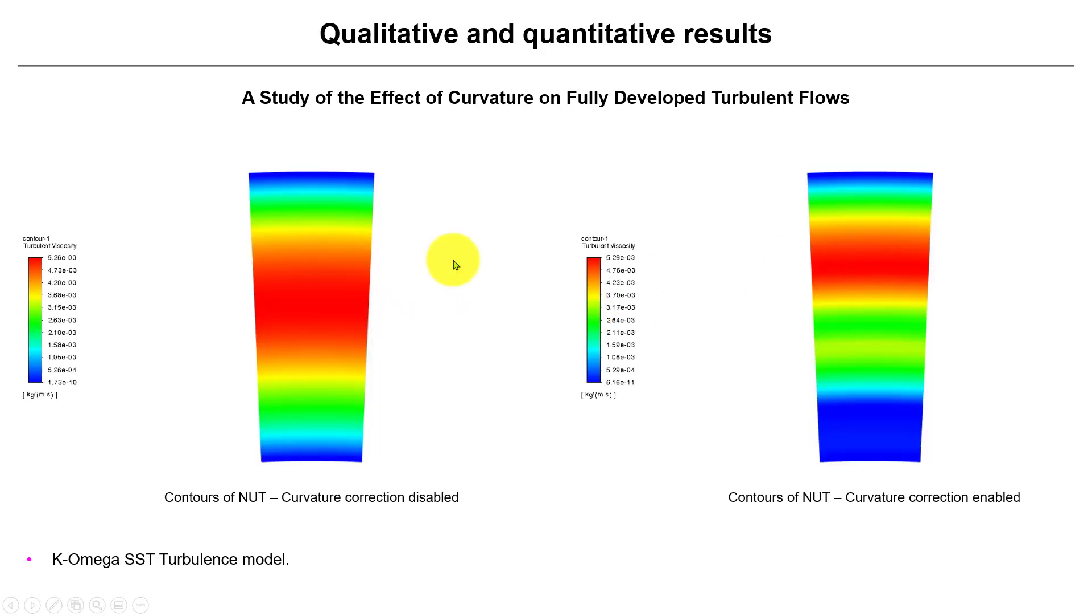And the same, well, we plot the node and see that when you disable that curvature correction, it tends to be very uniform. So that is, in this case, the influence.